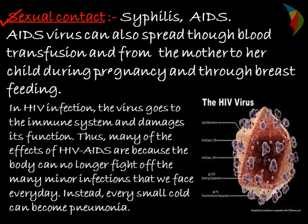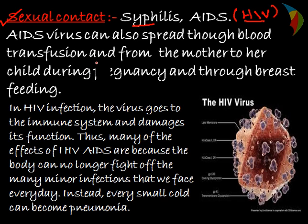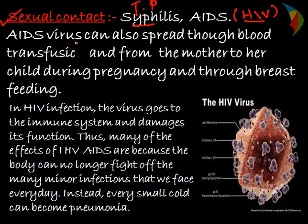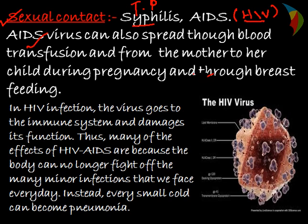Through sexual contact — if a person is suffering from HIV virus, through unprotected sex the AIDS virus is likely to get transmitted to a healthy person. AIDS is caused due to HIV virus. Syphilis is caused due to Treponema pallidum, a microorganism transmitted from an infected person to a healthy person. The AIDS virus is also transmitted through blood — if the same syringe is used from an infected person to a healthy person, they are likely to get the AIDS virus.